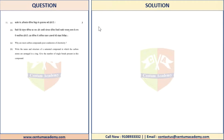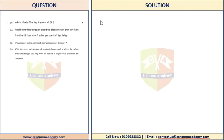Let's read the question. It says: why are most carbon compounds poor conductors of electricity? This is a one-marker question. The expected keywords or points would be a maximum of two, so make sure you include the two most important keywords in your answer.